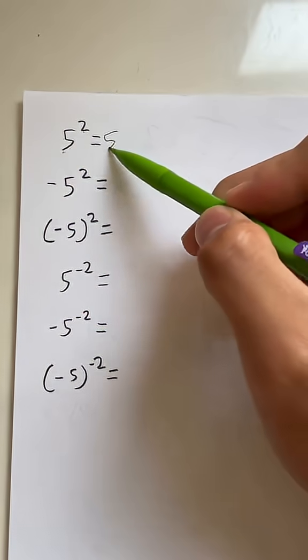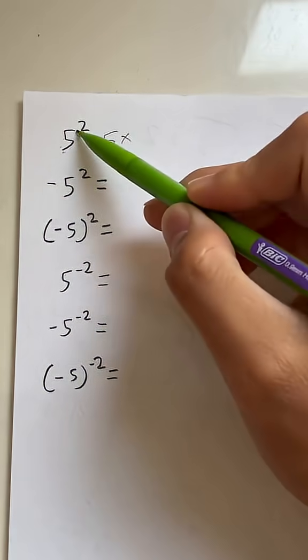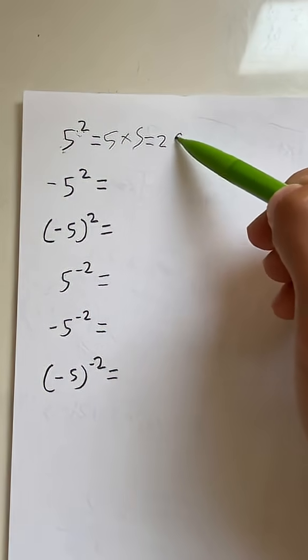5 to the second power, we have a base of 5, and we have to multiply it by itself two times. 5 times 5, which will give you 25.